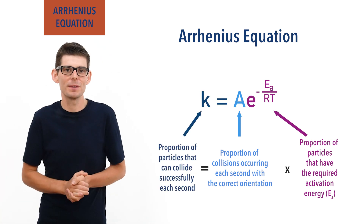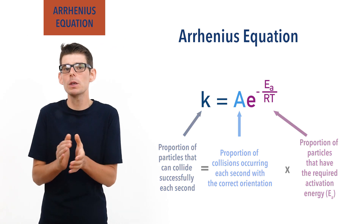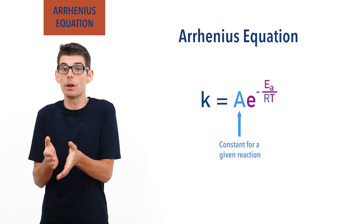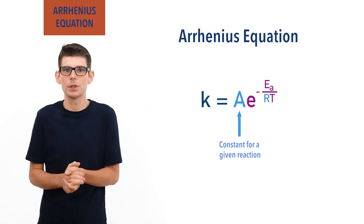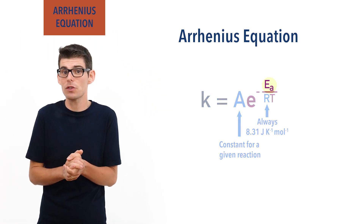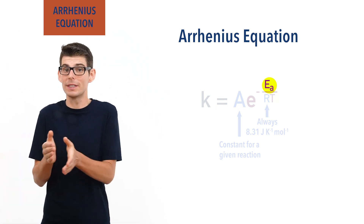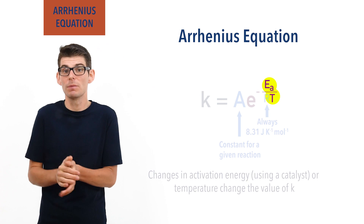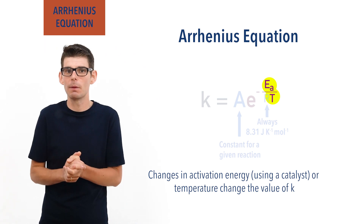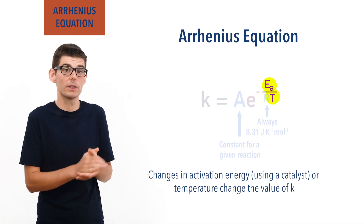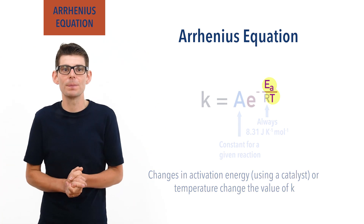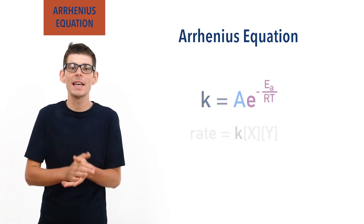At this level, the value of A, the Arrhenius constant, is pretty much always the same for a given reaction, and R, the gas constant, is also always the same. Meaning it is only changes in activation energy — by using a catalyst — or changes in temperature that will change the value of k, the rate constant, for any given reaction. As long as these are kept the same, the value of k will also always be the same. This is why in rate equations we don't write out the full Arrhenius expression; we simply substitute k into the rate equation.